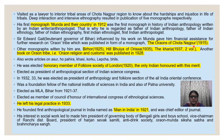The second monograph, The Oraon of Chotanagpur, was published in 1915. The other monographs written by him are Birhor, 1925; Hill Bhuiya of Odisha, published in 1935; and The Kharia in 1937, published in two volumes. Another book on the Oraon tribe — Oraon Religion and Customs — was published in 1928.